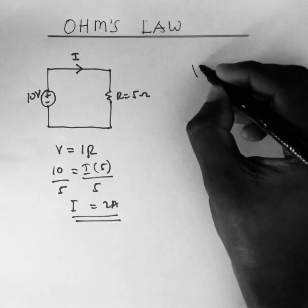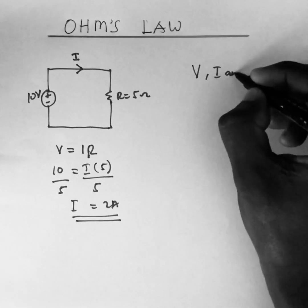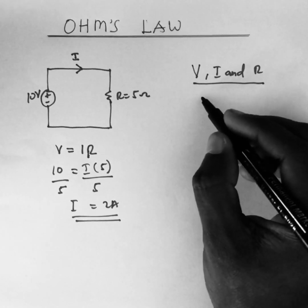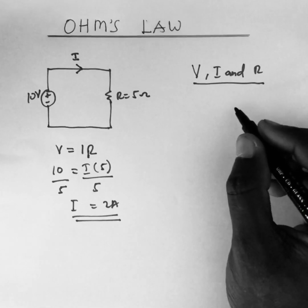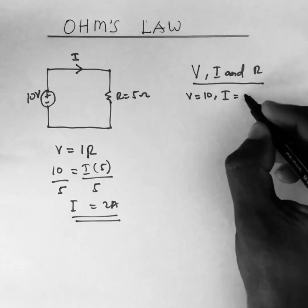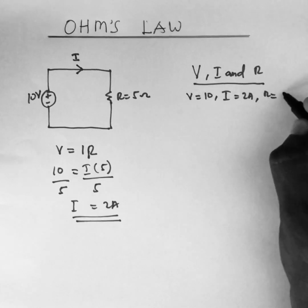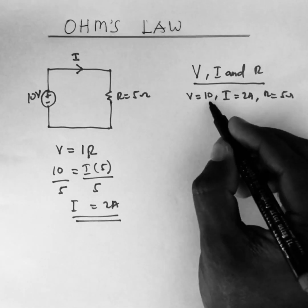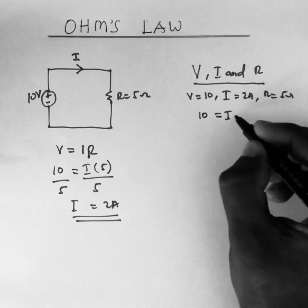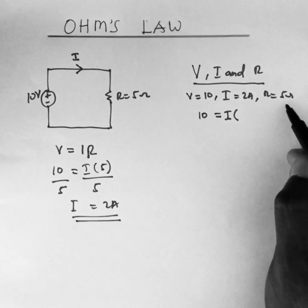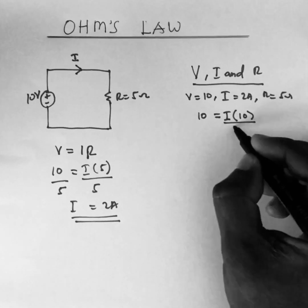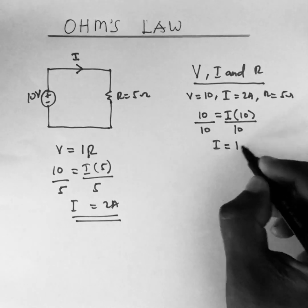Now let's talk about the relationship between v, i, and r. Let's maintain the value of v and increase the resistance r to see how the current behaves. We have v equal to 10 volts, i equal to 2 amperes, and r equal to 5 ohms. Maintaining the voltage at 10 volts and increasing the resistance from 5 to 10 ohms, we divide both sides by 10 and get i to be 1 ampere.